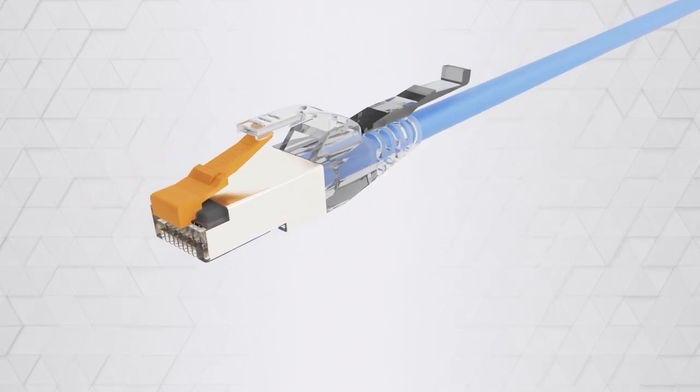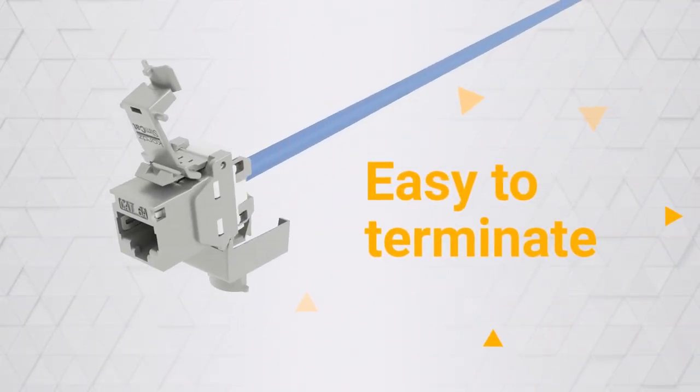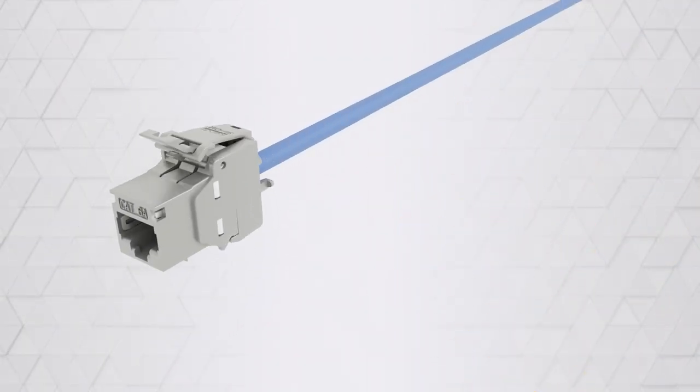The CAT6A Keystone RJ45 socket is easy to terminate whilst matching other Kord's Keystone sockets.